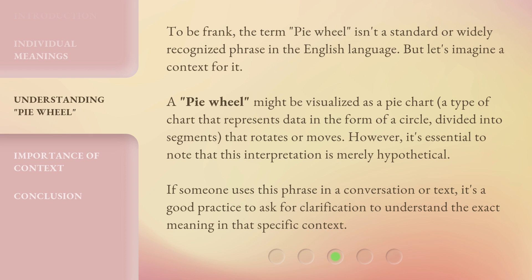A pie wheel might be visualized as a pie chart — a type of chart that represents data in the form of a circle divided into segments — that rotates or moves. However, it's essential to note that this interpretation is merely hypothetical.